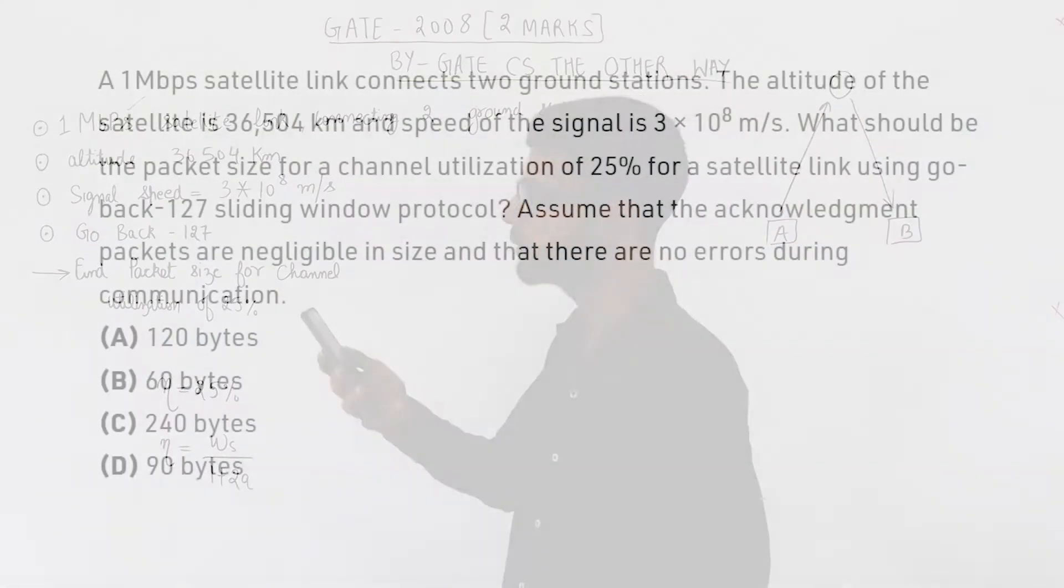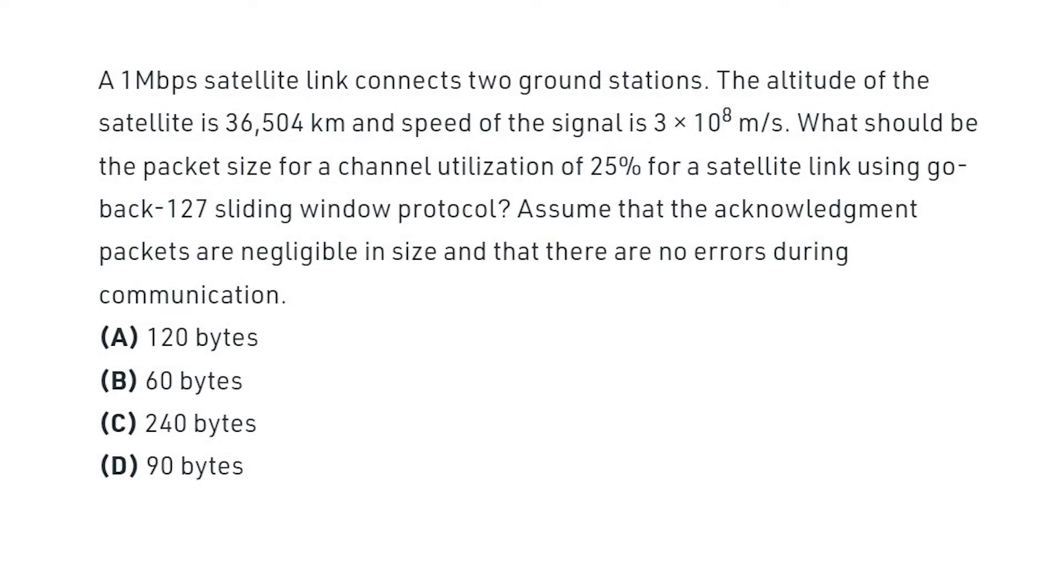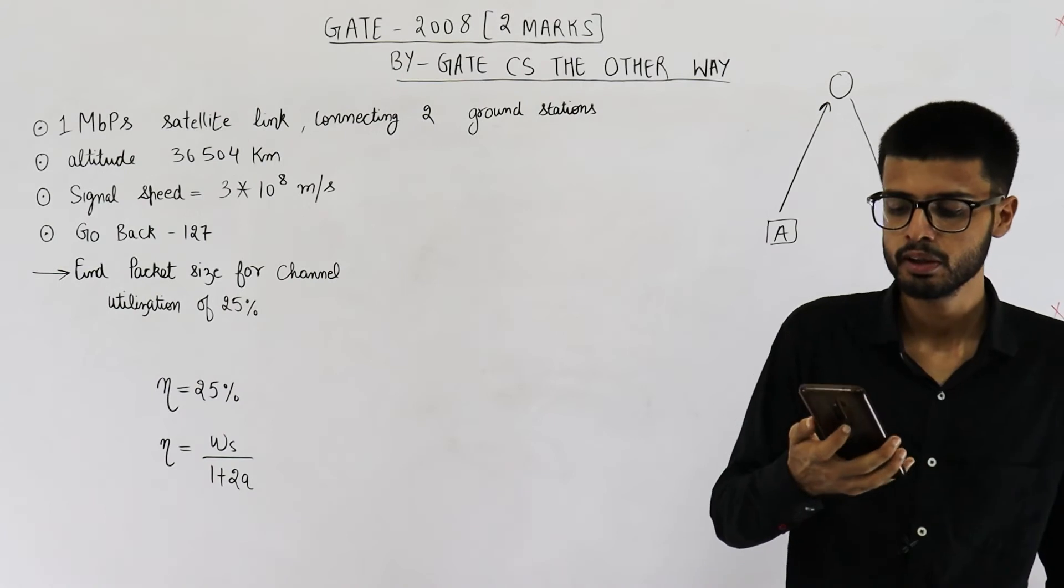They are saying a 1 Mbps satellite link connects two ground stations. The altitude of satellite is 36,504 km. The speed of signal is 3 × 10^8 m/s. What should be the packet size for a channel utilization of 25% for a satellite link using go-back-127 sliding window protocol? Assume that the acknowledgement packets are negligible in size and that there are no errors during communication.